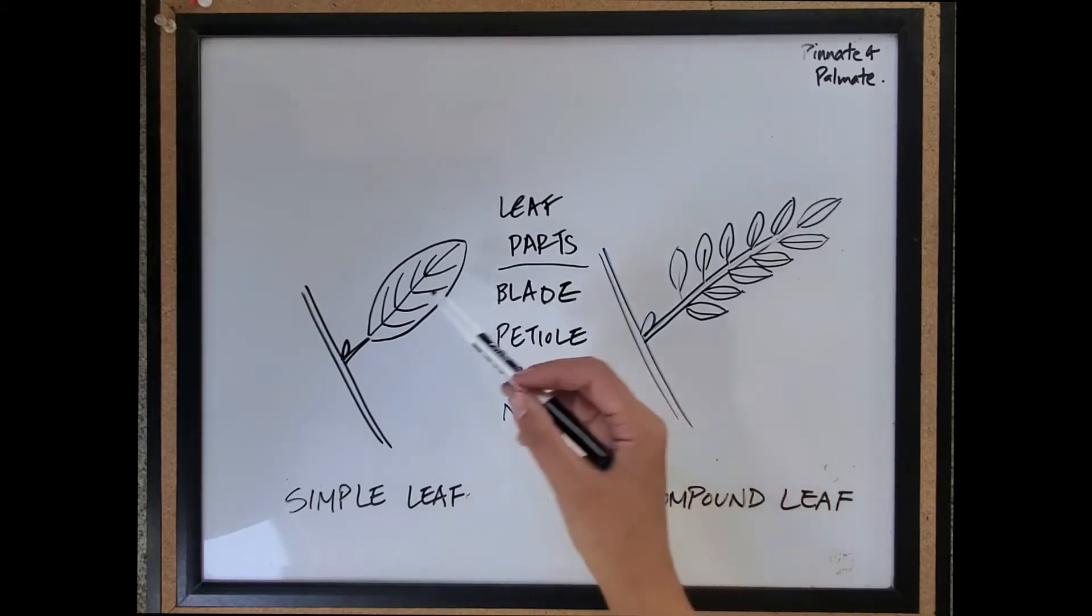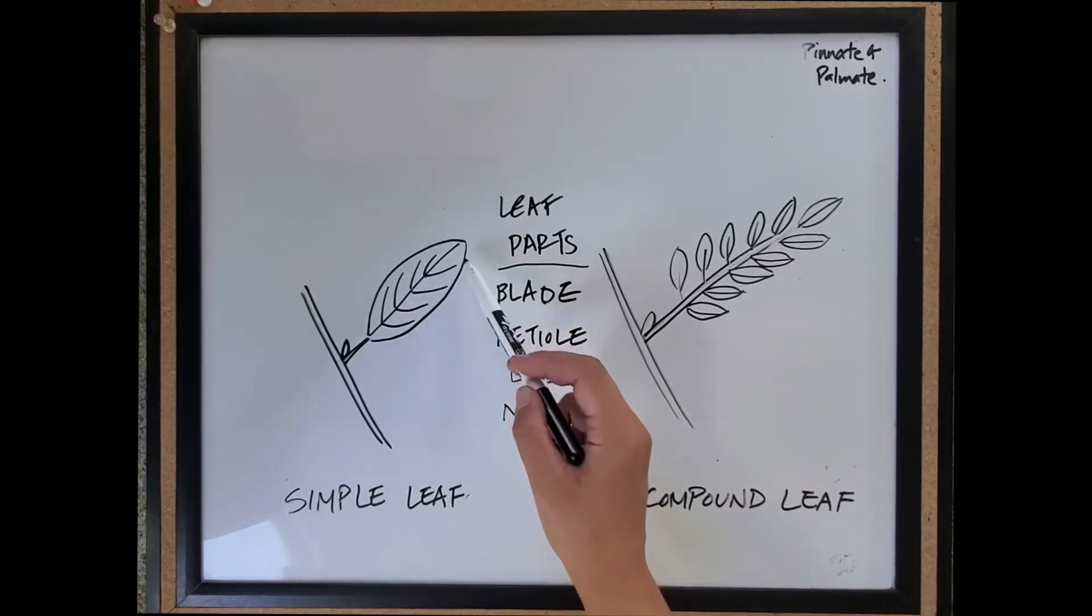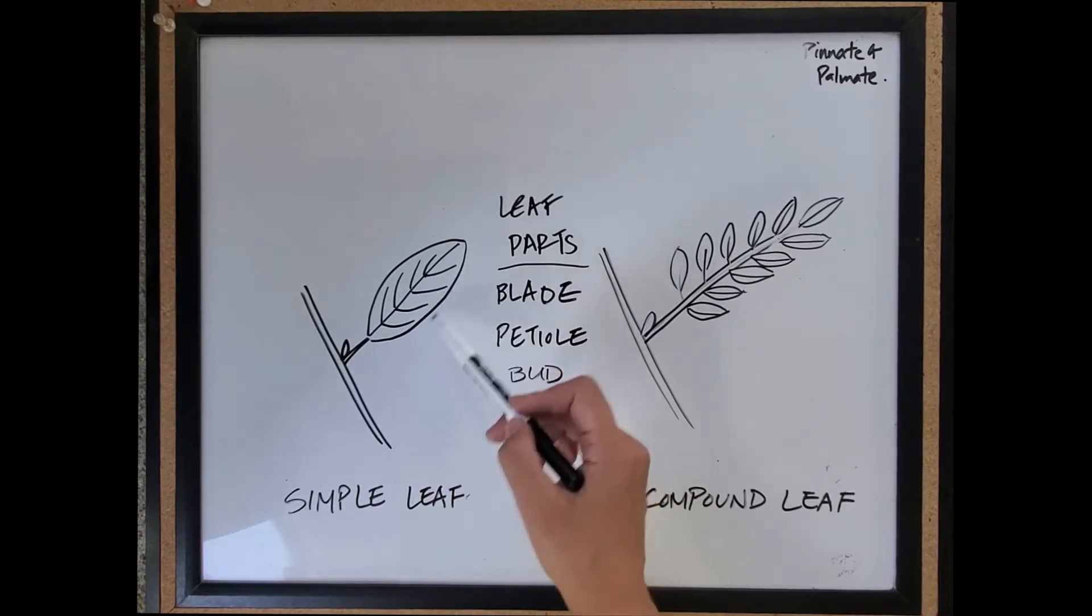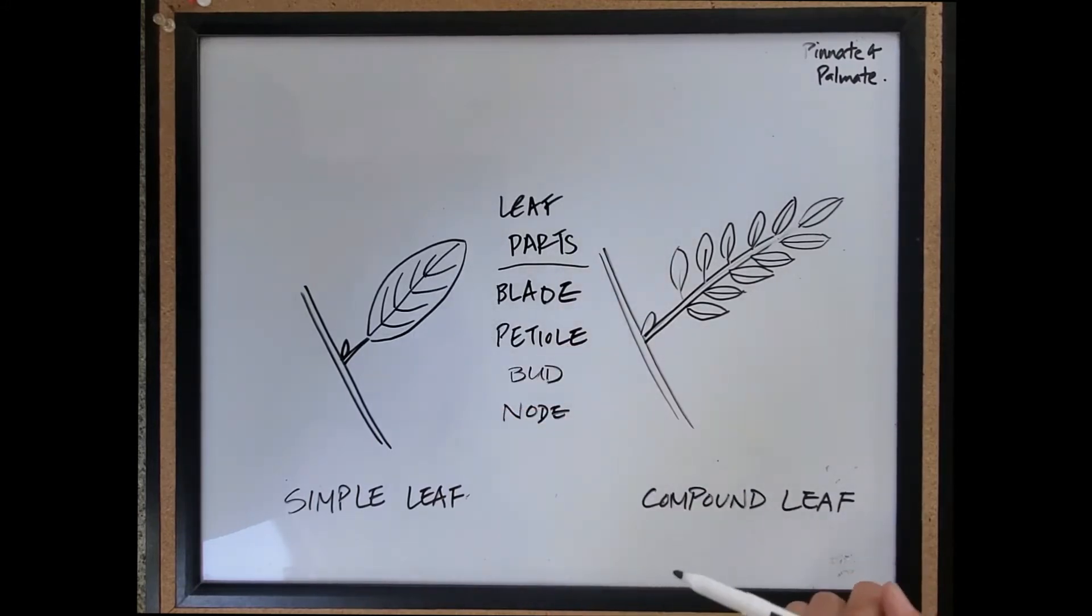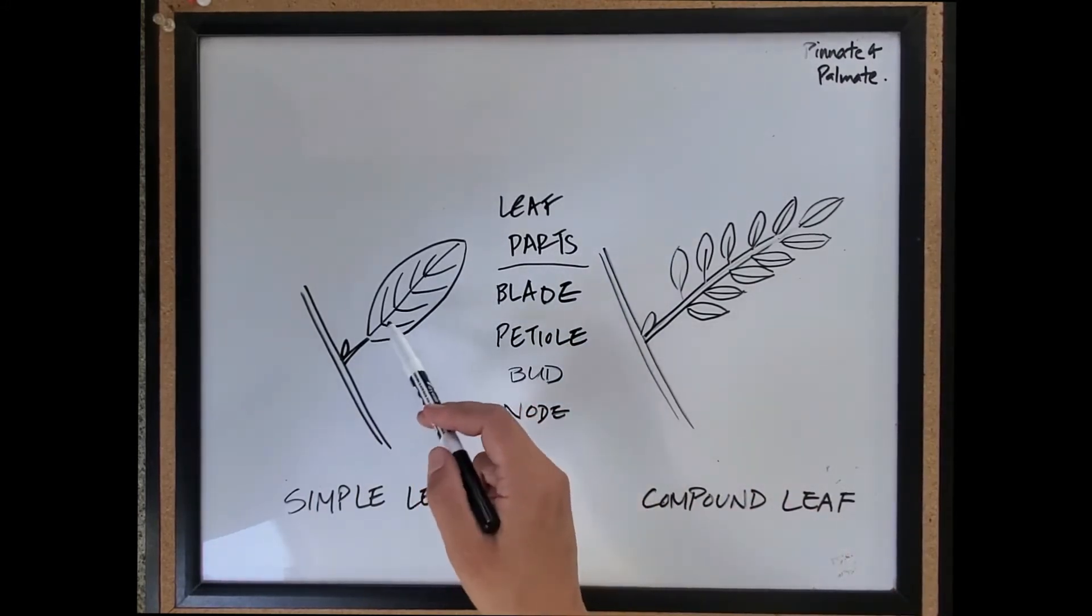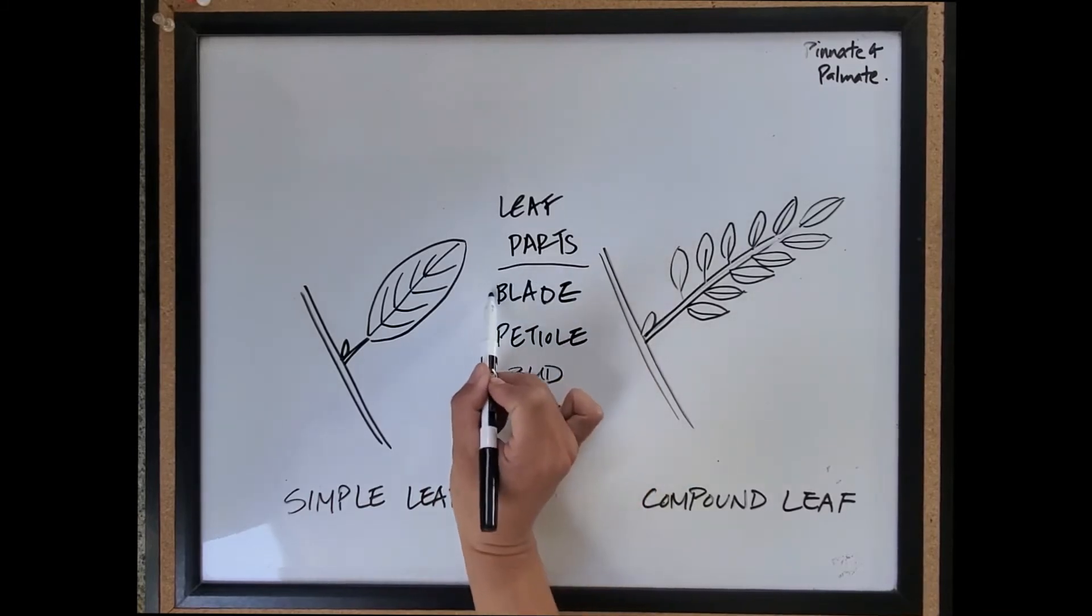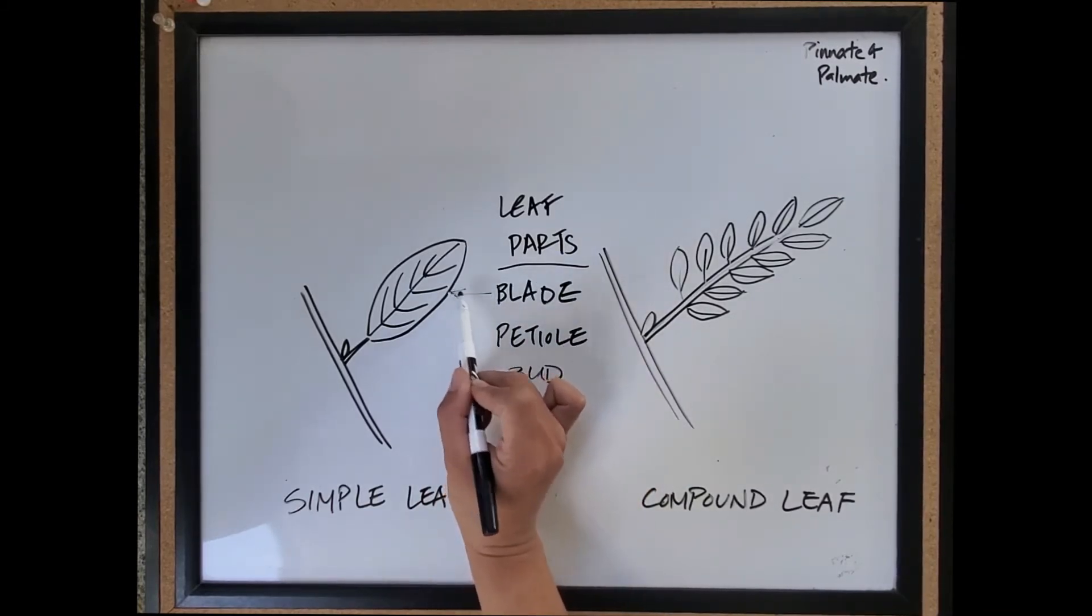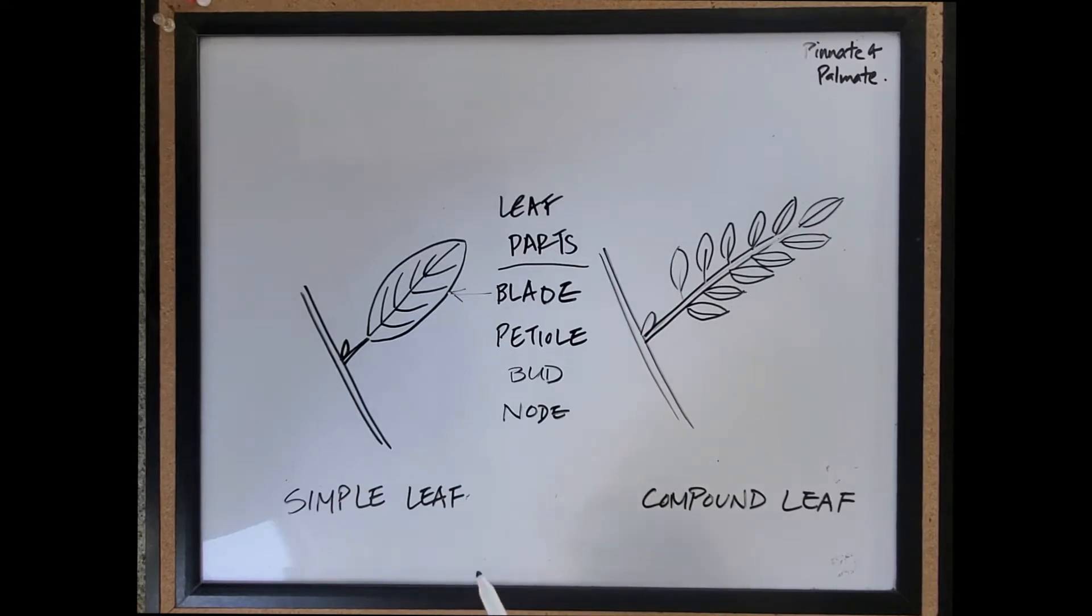You have the blade which is the flat green part usually, the flat part that the tree uses to collect light. In this case it's very easy. In a simple leaf it's not divided, it's just a single piece.